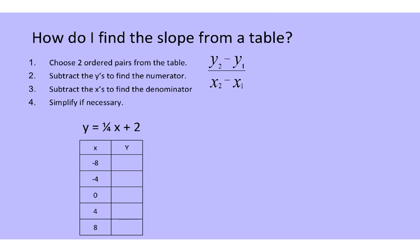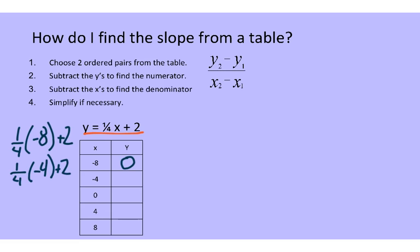Let's try another one where there's a fraction. The first thing we have to do is fill out our chart. Here's what this equation looks like if I substitute negative 8: 1/4 times negative 8 plus 2 gives negative 2 plus 2, which is 0. Then 1/4 times negative 4 plus 2: that's negative 1 plus 2, which is 1. Putting 0 in: any number times 0 is 0, plus 2 gives 2. Putting 4 in gives 3. And putting 8 in gives 4.